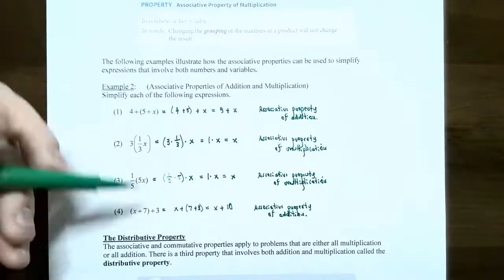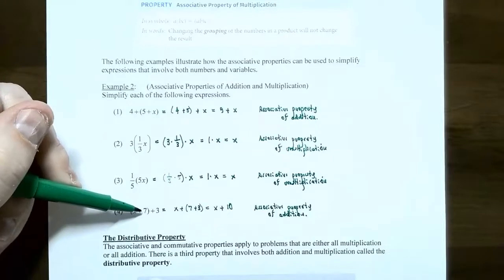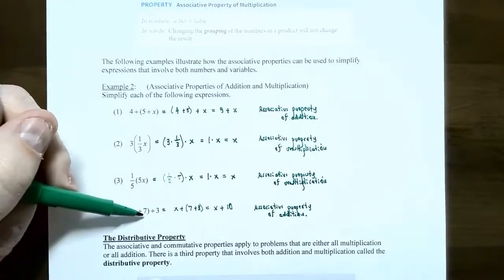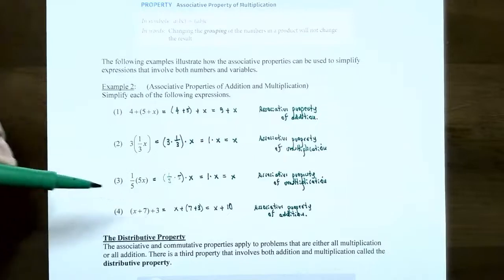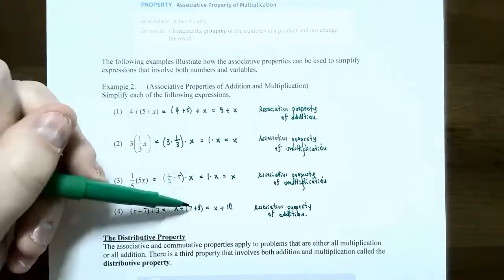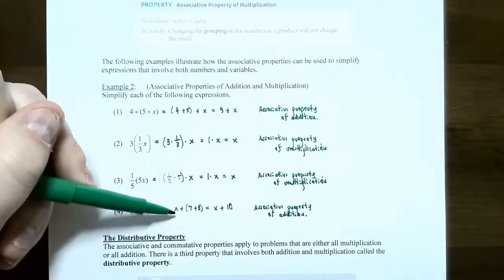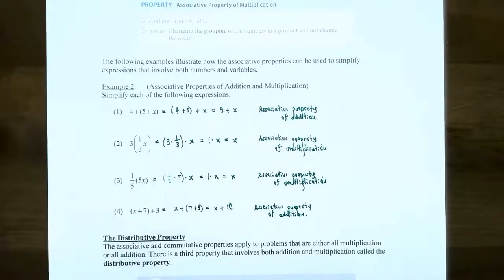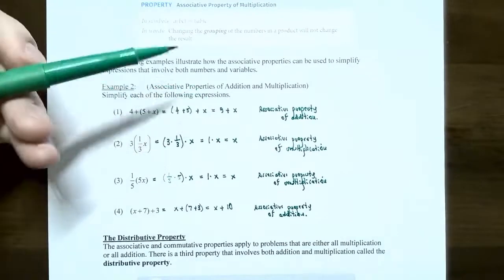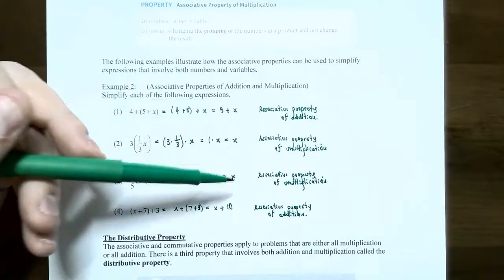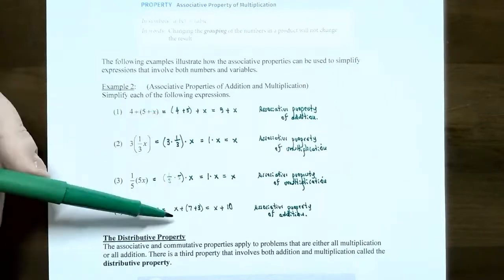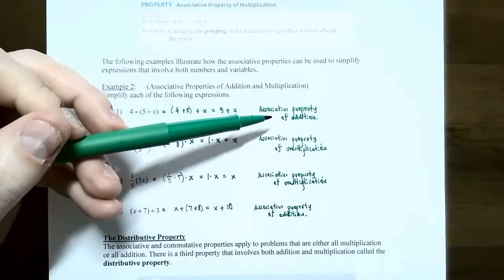Number 4: the quantity (x plus 7) plus 3. I want to add 7 and 3, so let's rewrite the addition problem as x plus (7 plus 3). Seven plus 3 gives you 10, so x plus 10. This is the associative property of addition. For these four problems, don't focus only on the answer — focus on how you can rewrite the problem to use the associative property of addition or multiplication.